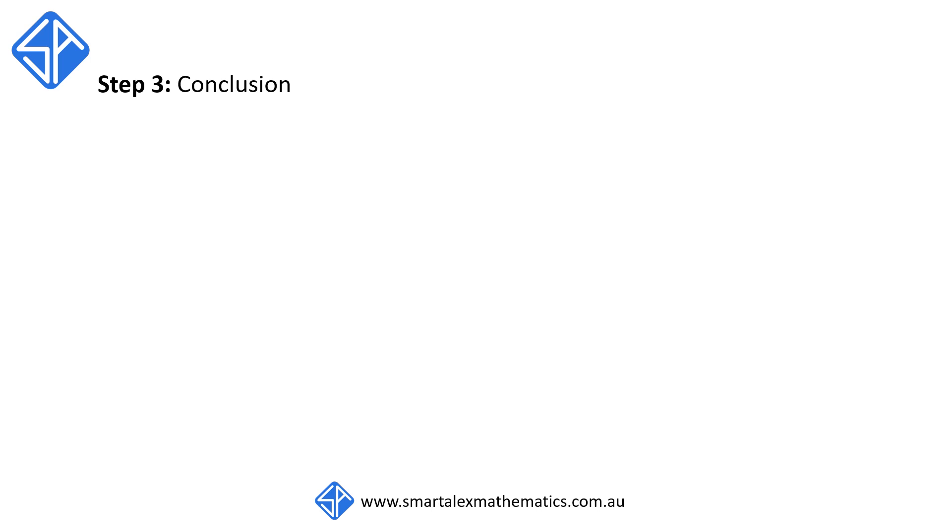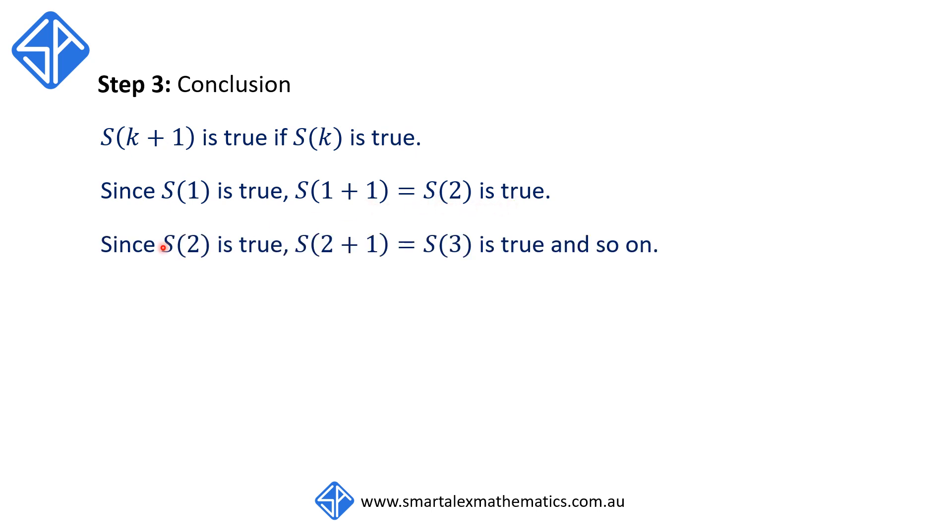The last part of the proof is the conclusion. We start by saying S(k plus 1) is true if S(k) is true. But since S(1) is true, S(1 plus 1), which is S(2), is also true. And since S(2) is true, S(2 plus 1), which is S(3), is true and so on.